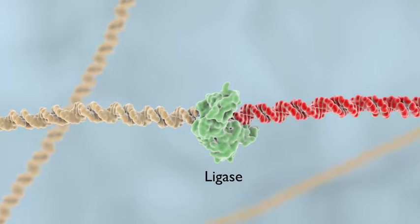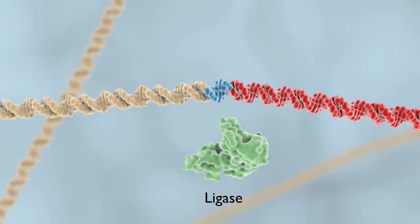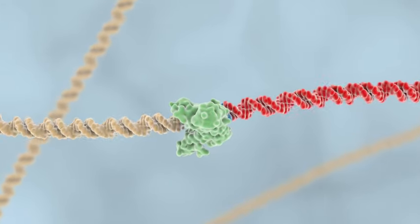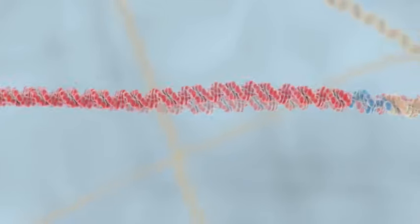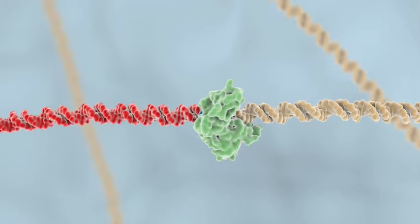This so-called ligase enzyme attaches the sticky ends in the solution to produce circular plasmids that now carry the gene that codes for the desired protein.